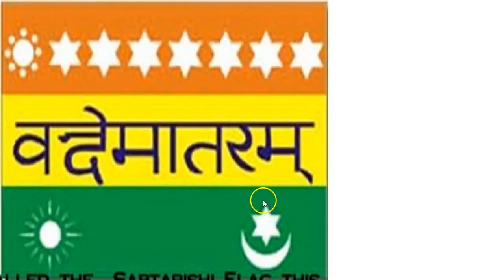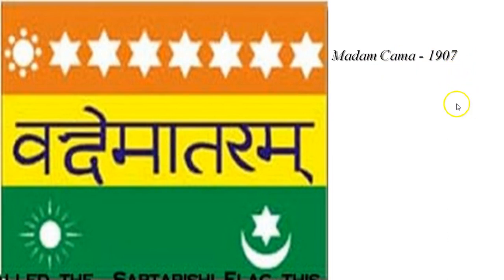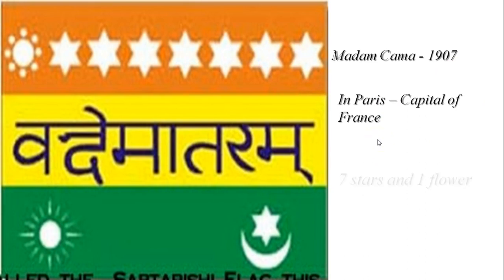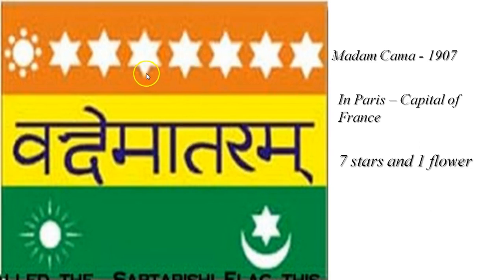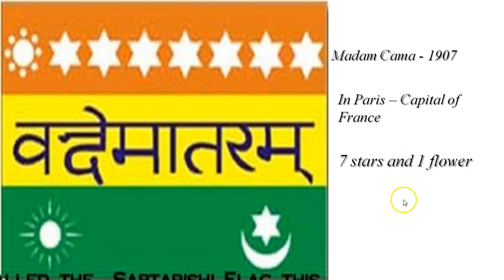We have now seen the second flag. It had drawn lines of sands, a light over 7 stars, and a flower in the hall. There were also sands and a candle on it.